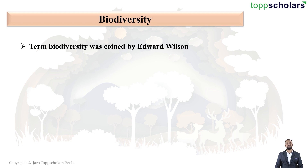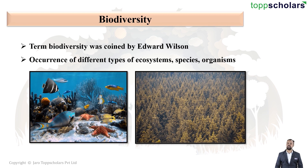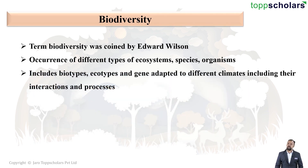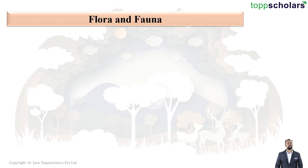So basically, we can define biodiversity as the occurrence of different types of ecosystems, species, organisms, etc. Biodiversity includes biotypes, ecotypes, and genes which are adapted to different climates, including their interactions as well as processes.